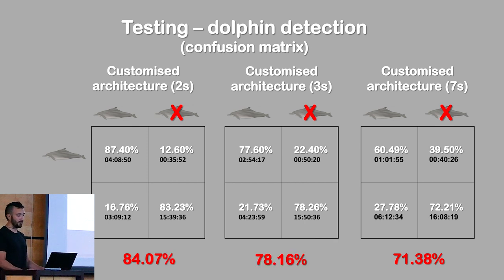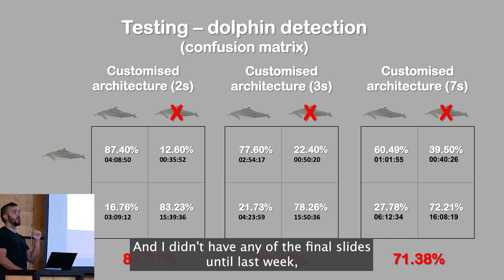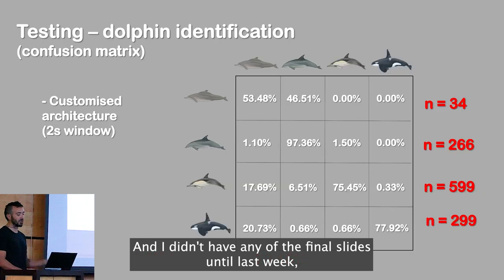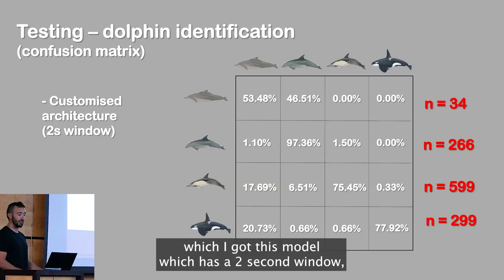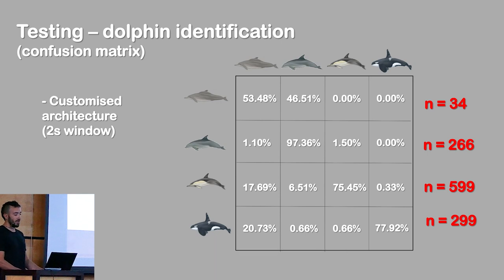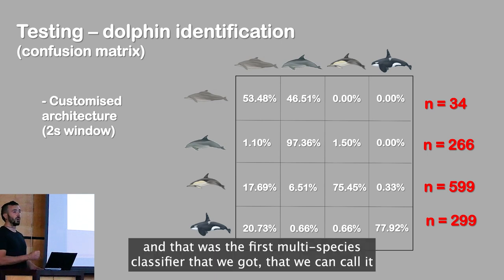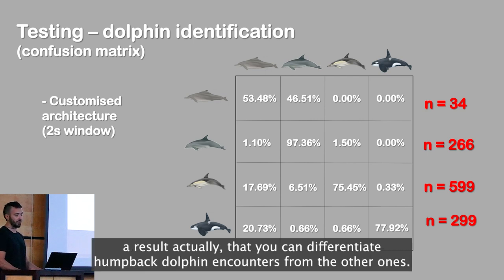I didn't have any final slides until last week, when I got this model — the two-second window — and that was the first multi-species classifier result we could actually call a result. You can differentiate humpback dolphin sounds from the other ones. I'm sure this is not the last version, but I'm sure I found a direction for where to go.